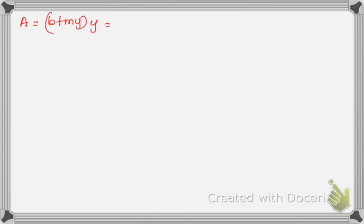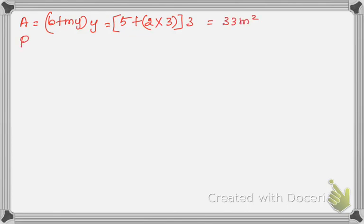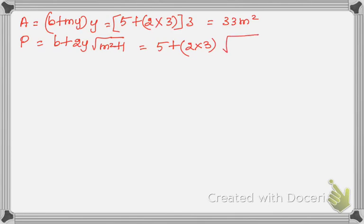We are going to calculate the area. Since it is a trapezoidal channel, the area formula is A = (B + MY)·Y. With B = 5, M = 2, and Y = 3 (normal depth), we get A = 33 m². Next, the wetted perimeter P = B + 2Y·√(M² + 1) = 5 + 2(3)·√(4+1) = 18.41 meter.